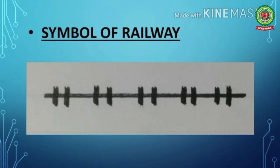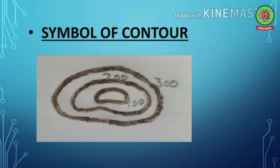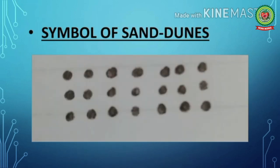Another important conventional symbol is contour — an imaginary line joining places of the same height above sea level — drawn in brown color. Next we have sand dunes, which means small hills of sand, depicted with brown dots on a map.